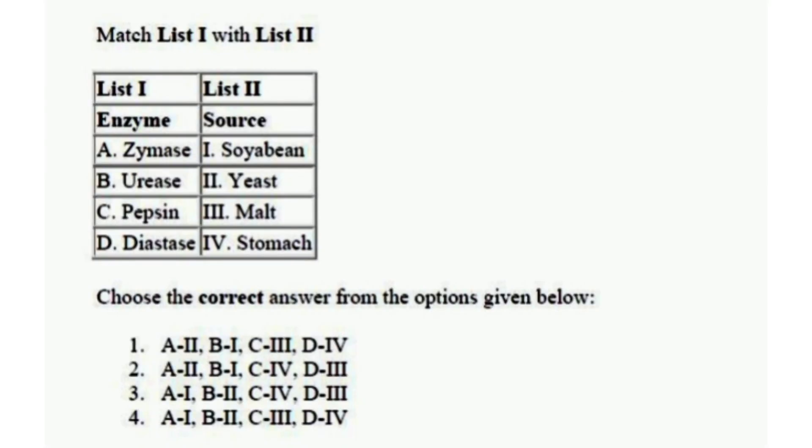The last question is a match the following. List 1 has enzyme, list 2 has sources. List 1: zymase, urease, pepsin, diastase. List 2: soybean, yeast, malt, and stomach. Choose the correct answer.